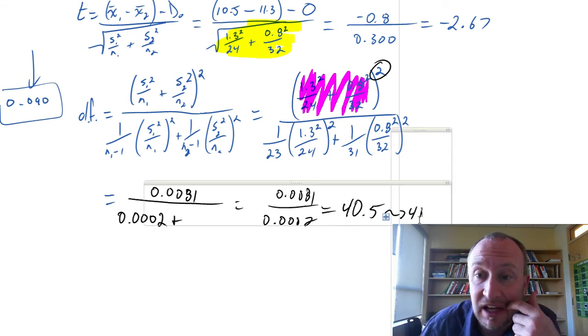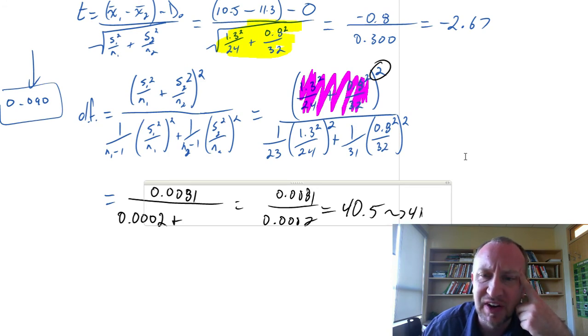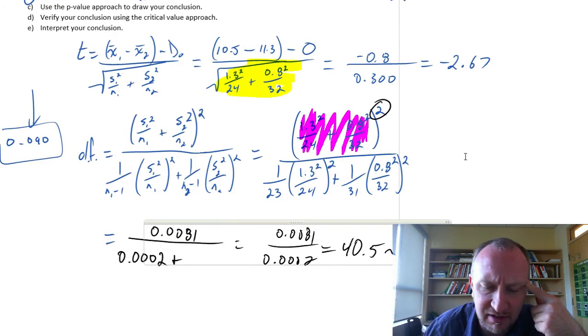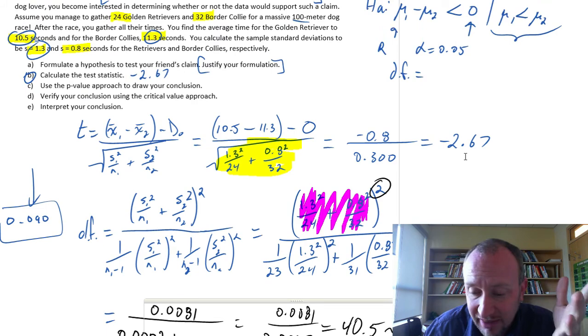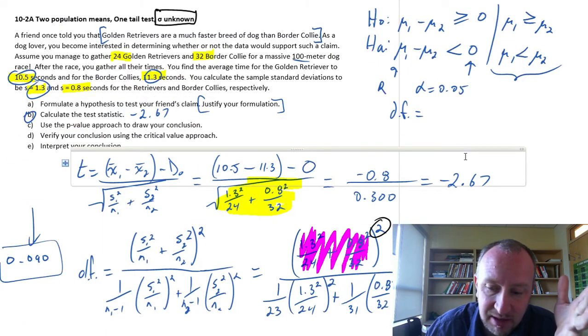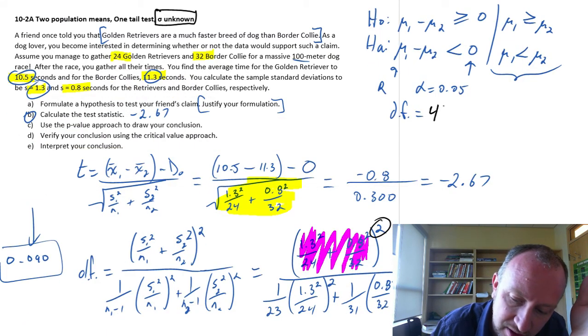It's an awful calculation, right? Totally understand if you hate that one. Hopefully you just fast-forwarded to it and didn't watch every single step of the way. So all of that, just to say, and we come back up here, I have 41 degrees of freedom.